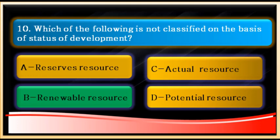Actual, potential, and reserve are resource categories based on development. Actual resources are those we use in the present; potential resources and reserves can be used in the future.